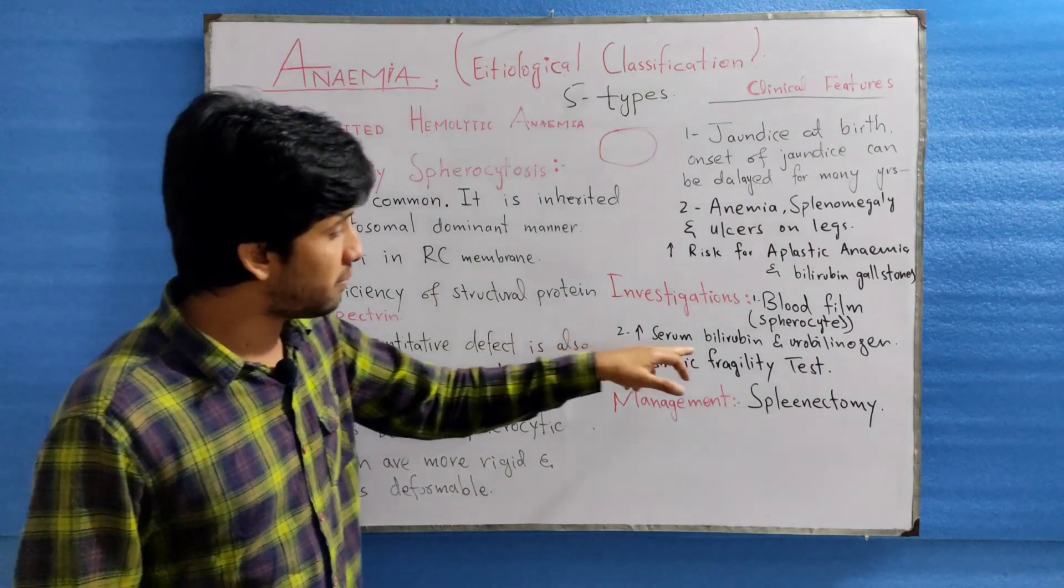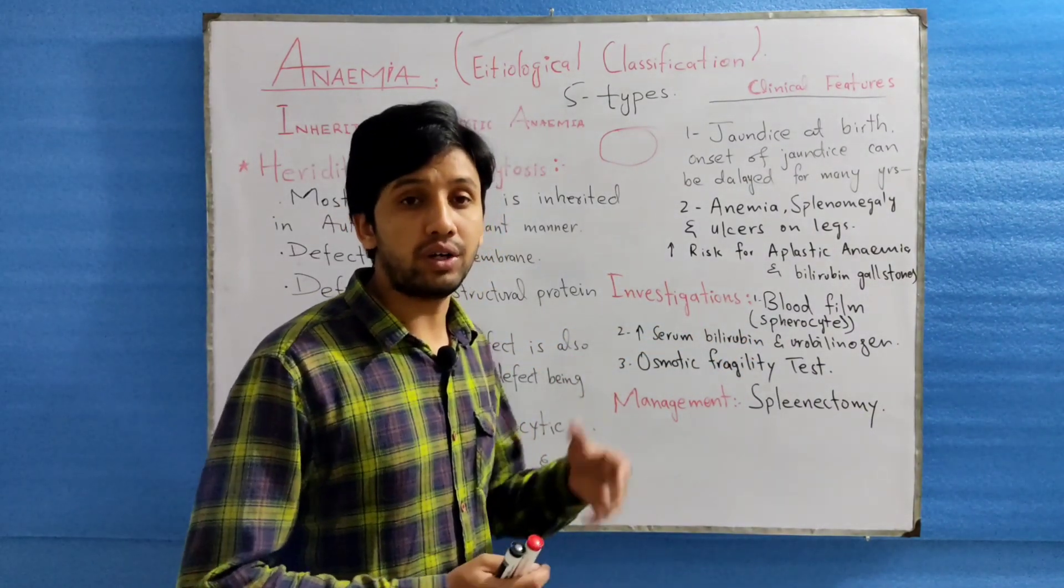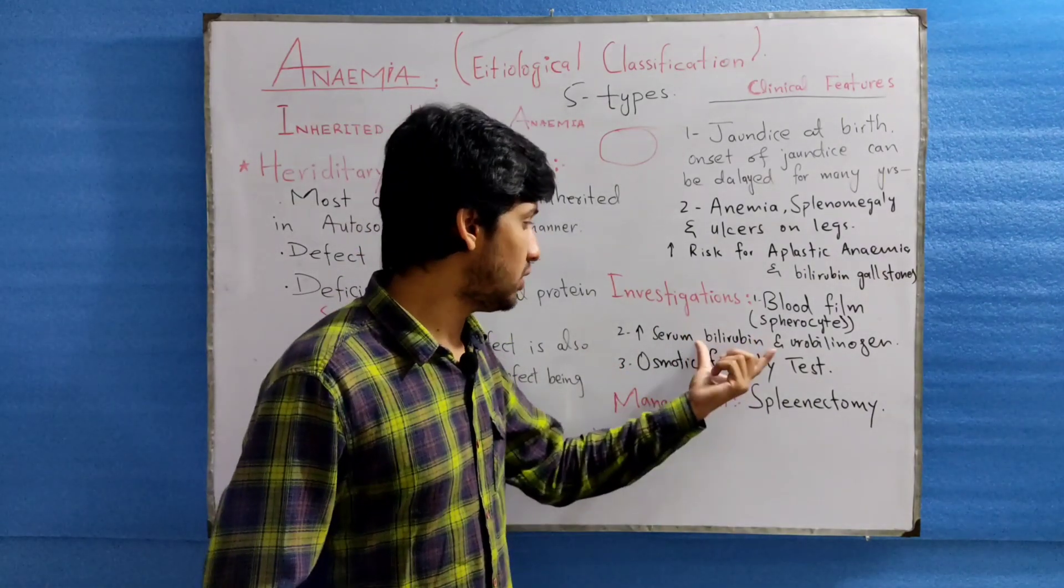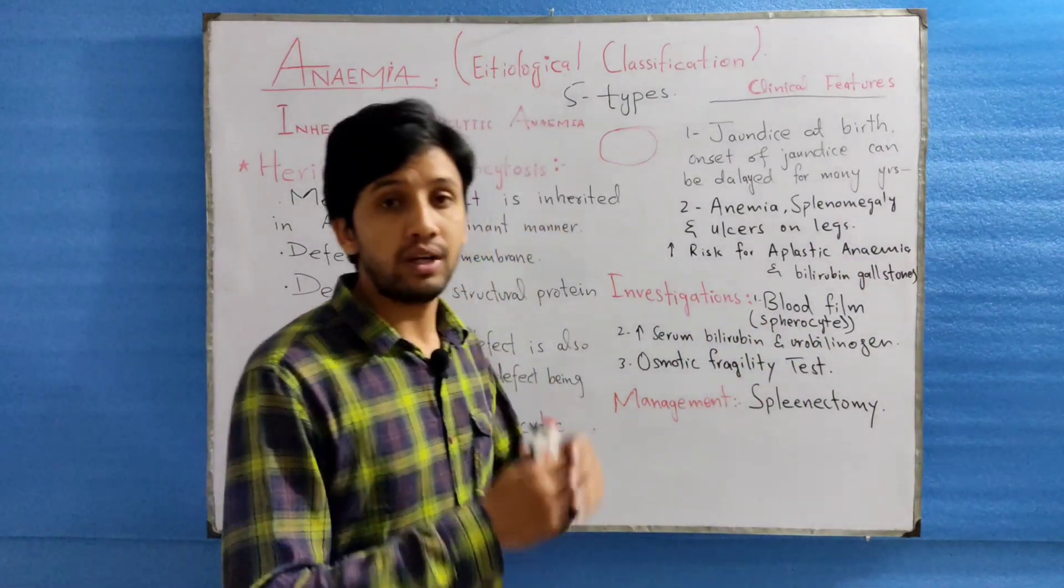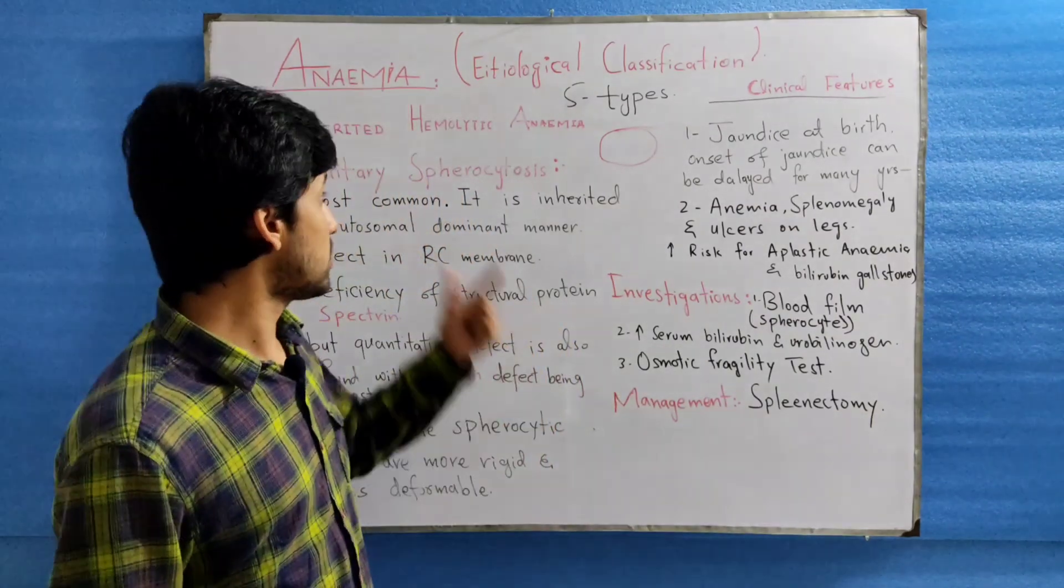The increased serum bilirubin and urobilinogen will be raised when we investigate the serum level of these two. This is due to the increased hemolysis which is occurring in case of HS.